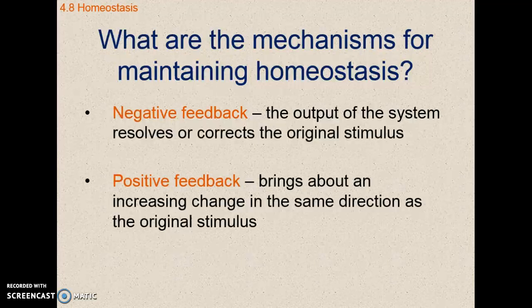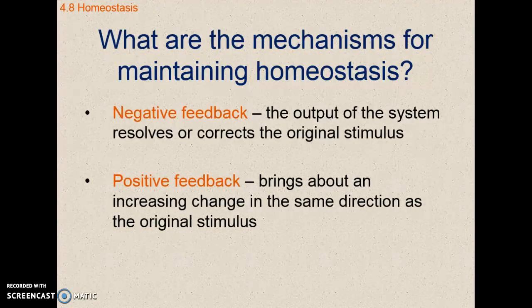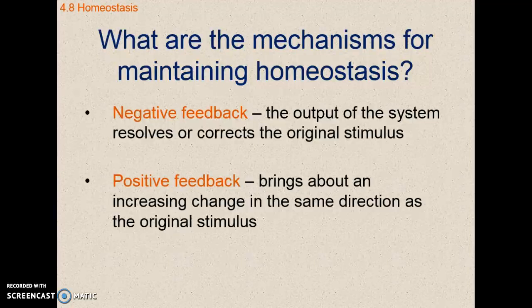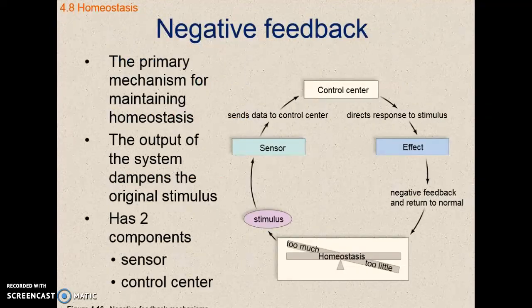Thinking of everyday examples: we hear positive feedback and negative feedback used when talking about behavioral changes, like encouraging kids. If you give a kid positive feedback, they're going to want to do that behavior again. If it's negative feedback, they may never do it again. With negative feedback, the primary mechanism for maintaining homeostasis is through this process.